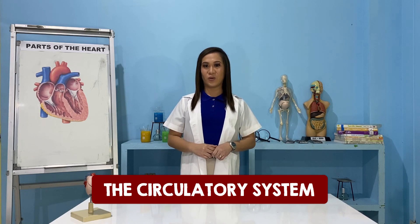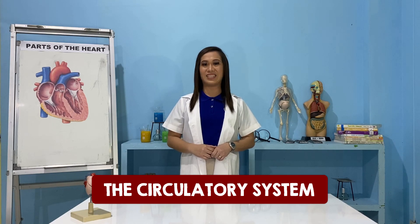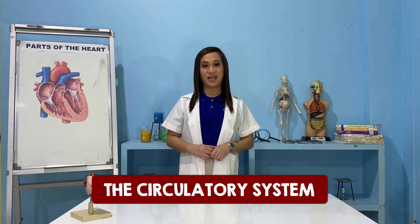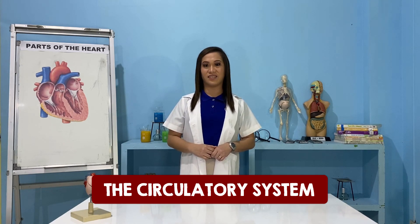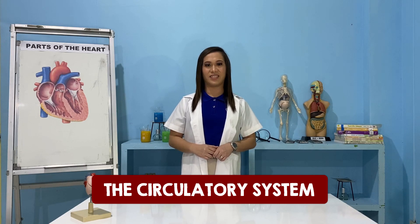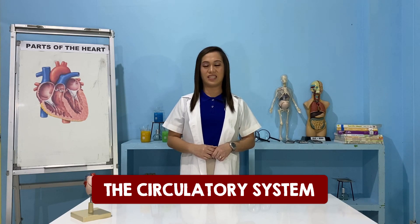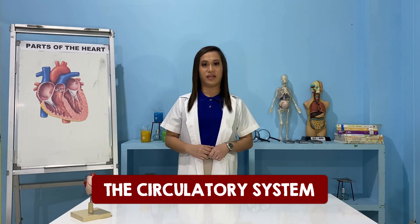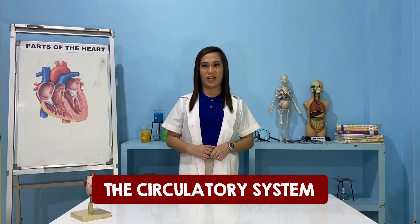The circulatory system is a network consisting of blood, blood vessels, and the heart. This network supplies tissues in the body with oxygen and nutrients, transports hormones, and removes unnecessary waste products.